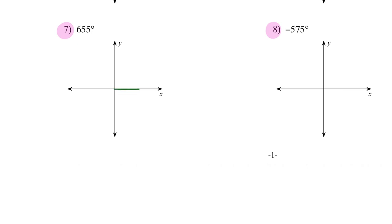For 655 degrees — this is positive so I go counterclockwise. It's more than 360, so going around: 360, and then I'm missing 295 more. From 360: 90 more, 180, 270 — now I'm missing about 25 more, so somewhere around here. That's my angle of 655 degrees.